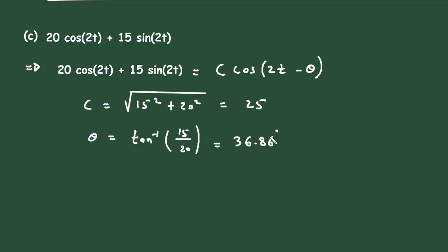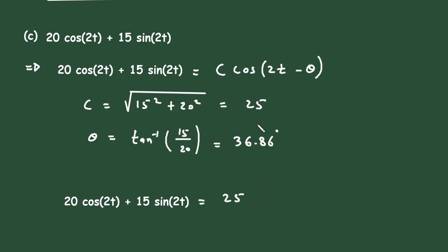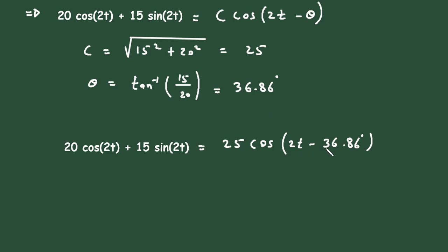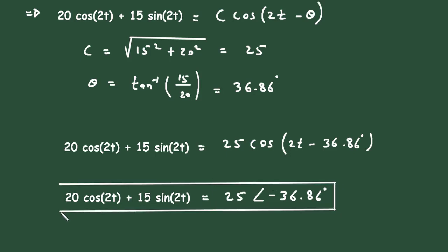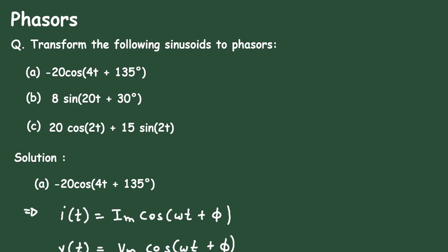So θ = 36.86°. We can write this as 25·cos(2t − 36.86°). This is the standard sinusoidal form, so we can convert it to a phasor: 25 at an angle of −36.86°. This is the final answer in phasor form, and this is how we convert sinusoids to phasors. Don't forget to like, share, and subscribe to this channel. Thanks for watching.